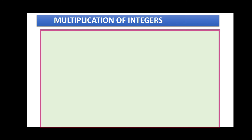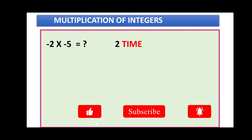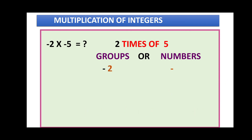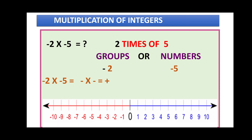Now let us see one more example with two negative signs: minus two into minus five. This means two groups of five. The groups are two and the numbers are five. Minus into minus gives plus, so we move to the right side of zero — forward direction.